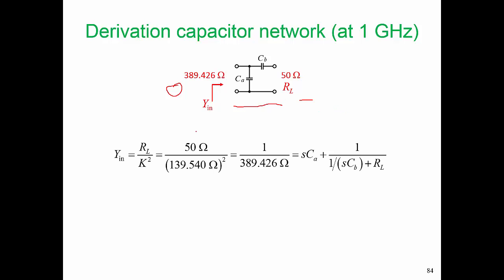Here is our design equation. Y in is going to be equal to RL divided by K squared. That is the description of our inverter. K is the impedance of the impedance inverter. So it's RL divided by K squared, 50 ohms divided by the K value, which is 139.5 ohms squared. That's equal to 1 over the input impedance. And when we do just a little bit of circuit analysis, we end up with that equivalent circuit.